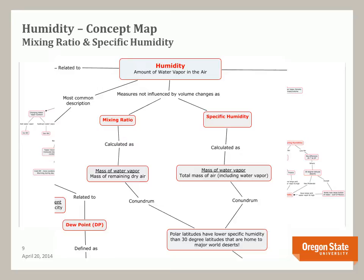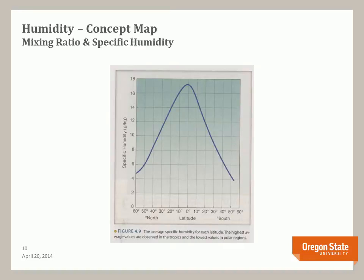This relationship is shown on the next graph: specific humidity is greatest at the equator and decreases toward higher latitudes. This means at 30 degrees latitude — the location of major deserts — the specific humidity is greater than at the poles. This seems odd, since deserts are viewed as very hot and dry. They certainly are hot, and we know they are dry. We will see later that this is a function of other aspects of humidity and air temperature.